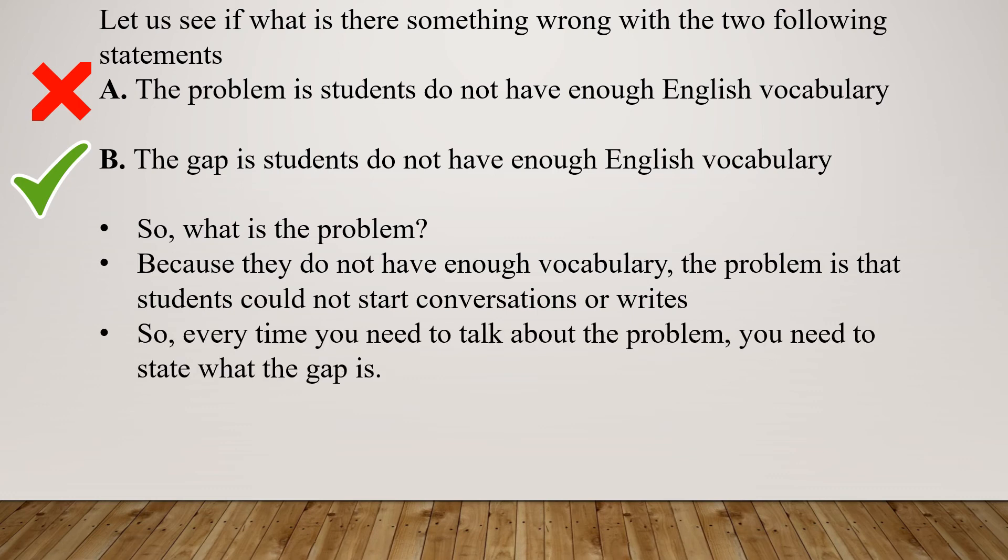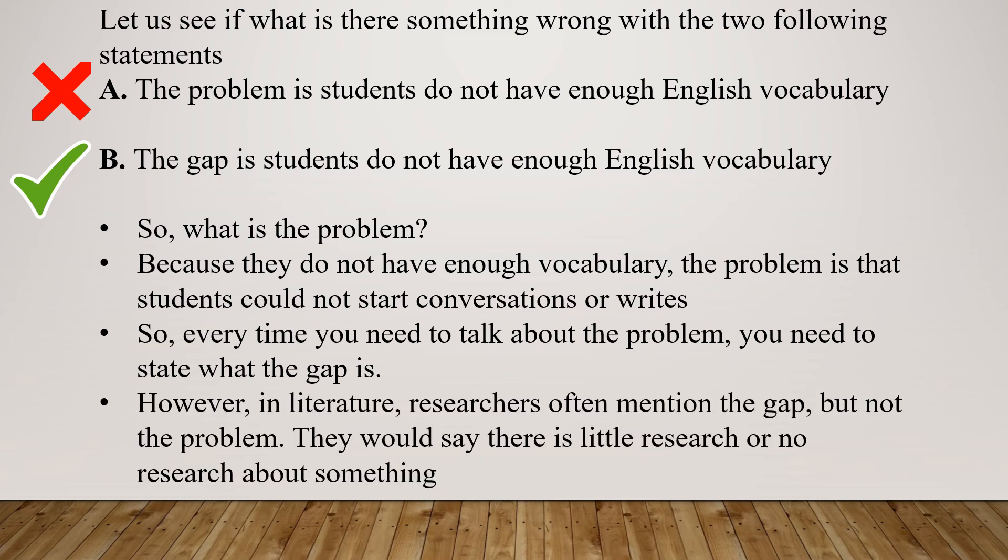So every time you need to talk about the problem, you have to state what the gap is. However, in literature, researchers often mention the gap but not the problem. They would say, for example, there is little research or no research about something. So basically, if you don't have something, it's a gap. It only becomes a problem if you need it. So basically, this is the difference between the gap and the problem.